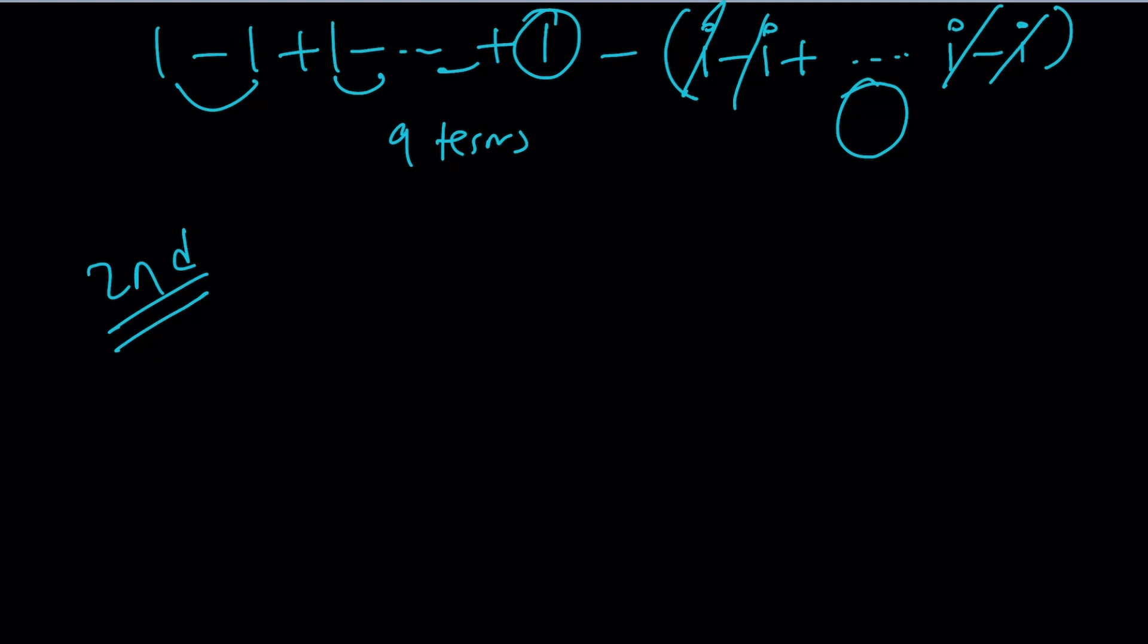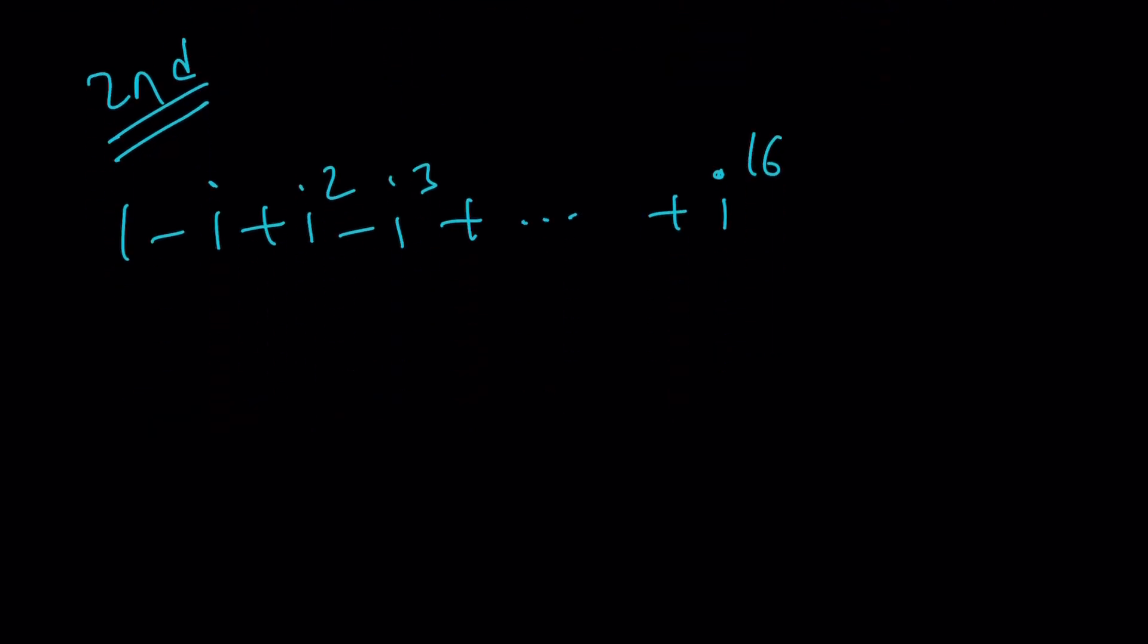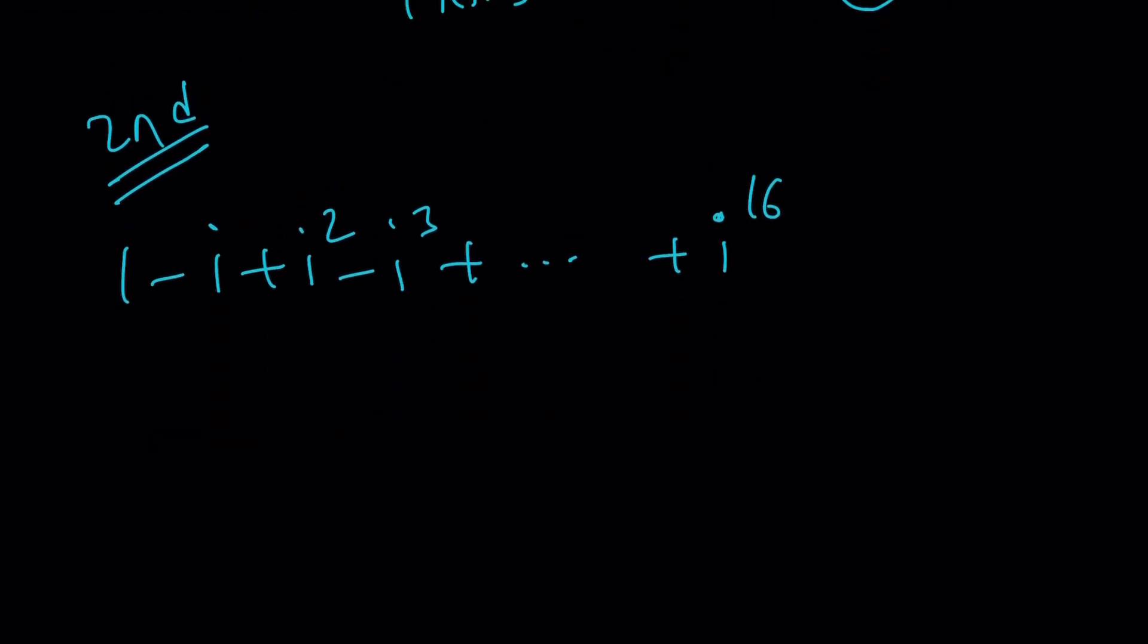So, we have one minus i plus i squared minus i cubed all the way up to i to the power of 16. Another way to look at it is, without separating the powers, looking at this from a geometric sum perspective. So, I'm going to write it as follows.